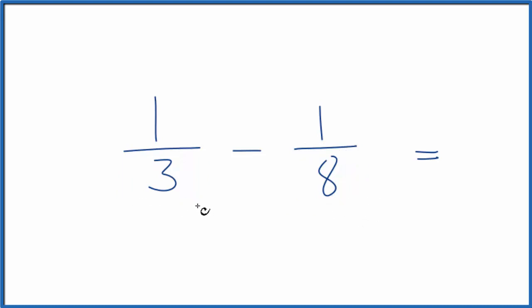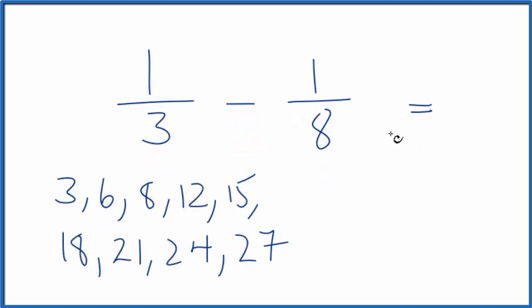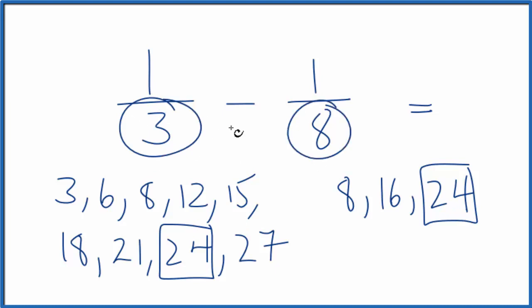So let's list the factors of 3: 3, 6, and some factors for 8. And actually right there, 24, that's the lowest common factor for both 3 and 8. So if we can get the denominator to be 24 for both of these, then we can subtract the fractions.